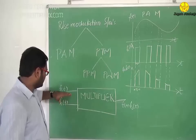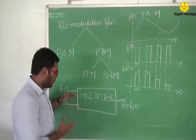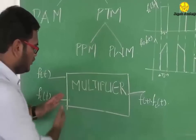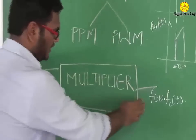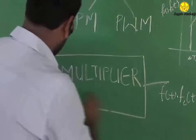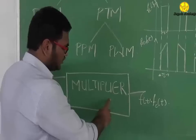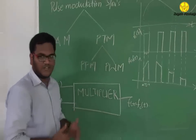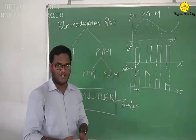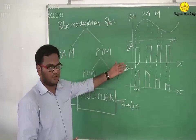In natural sampling, the carrier signal fc(t) and the baseband signal f(t) are made to pass through a multiplier circuit, which gives a multiplication of these two signals and produces the required PAM signal. The graphical representation will be as follows.